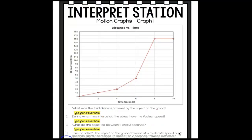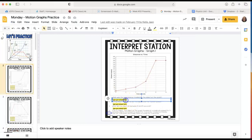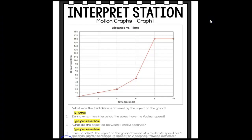So the first graphing station, let's look at the name of our graph, our units, and what's on the x and y. It tells us it's a distance versus time graph. Our time is in seconds on the x and our distance is in meters on the y. The first question says, what was the total distance traveled by the object on this graph? If you follow your line, the highest and furthest distance traveled was 160 meters. Make sure you add your units and be specific.